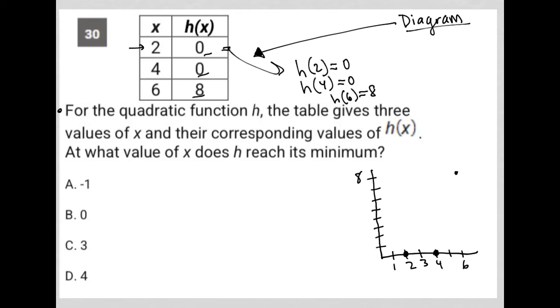So then, obviously, the parabola has to go down something like this, where the vertex is halfway between the two x-intercepts at x equals 3.